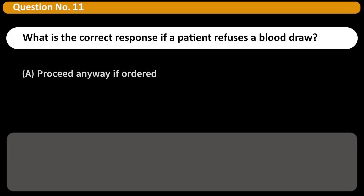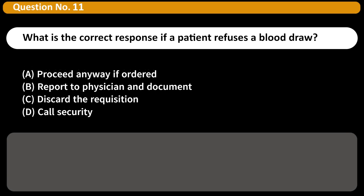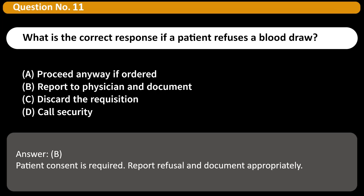What is the correct response if a patient refuses a blood draw? A. Proceed anyway if ordered. B. Report to physician and document. C. Discard the requisition. D. Call security. Answer: B. Patient consent is required. Report refusal and document appropriately.